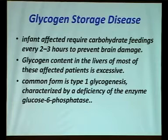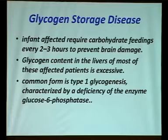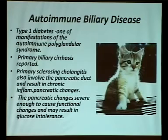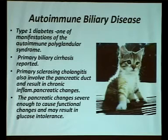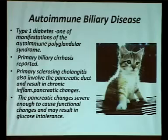Glycogen storage disease affects infants who require frequent carbohydrate feeding every two to three hours to prevent brain damage. Glycogen content in the liver is excessive. The most common is type 1 glycogen storage disease, due to glucose-6-phosphatase enzyme deficiency. Autoimmune biliary disease: type 1 diabetes is one manifestation of autoimmune polyglandular syndrome — primarily associated with primary biliary cirrhosis and primary sclerosing cholangitis.